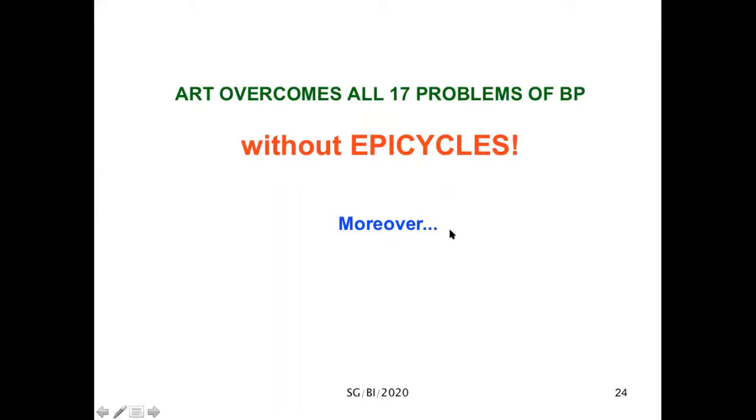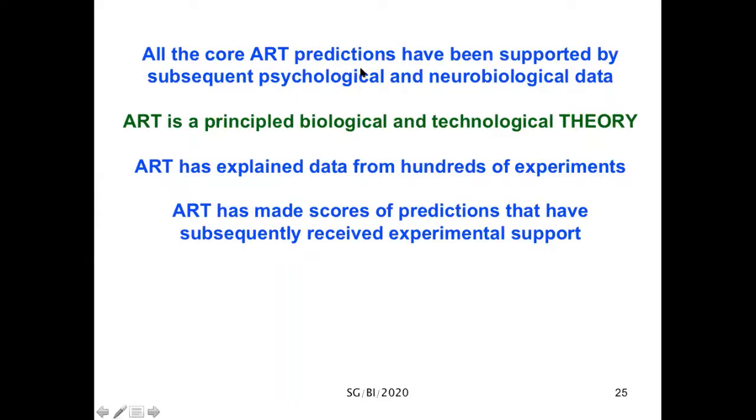ART overcomes all 17 problems of backpropagation without epicycles. Moreover, and no less important, the core ART predictions have been supported by psychological and neurobiological data. Indeed, ART is a principled biological and technological theory, not just an algorithm. It's explained data from hundreds of experiments and made scores of predictions that have subsequently received experimental support.